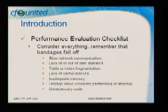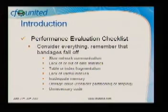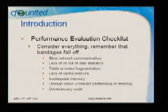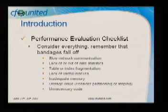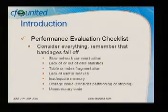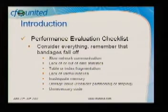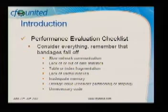Here are some examples on the checklist. Slow network communication. Lack of or out-of-date statistics — statistics are used by the database to figure out if it needs to use an index or not; they usually stay updated automatically but every now and then you've got to update them. Table or index fragmentation — when you create an index that's not the end of the story; you have to keep that index maintained. Indexes get fragmented and then they start to lose their effectiveness.